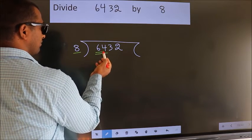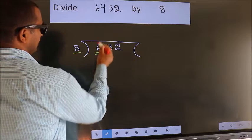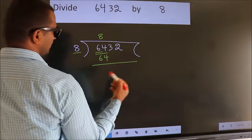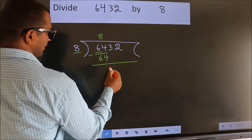When do we get 64? In 8 table. 8 eights, 64. Now, we should subtract. We get 0.